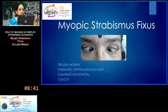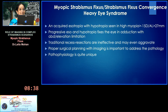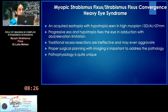So now we move on to the next condition — a complex strabismus where we need imaging to decide surgery. Myopic strabismus fixus, or strabismus fixus convergence and heavy eye syndrome, is an acquired esotropia with hypertropia seen in high myopia of usually more than 15 diopters and axial length more than 27 millimeters.